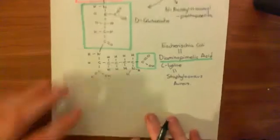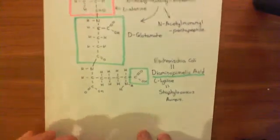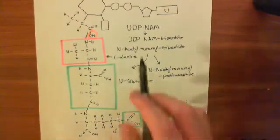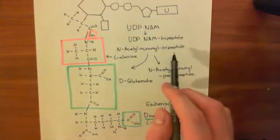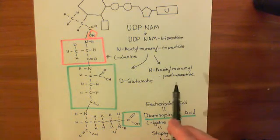Welcome back to this next video on antibiotics which affect cell wall biosynthesis in bacteria. In this video, what we're going to do is look at how it is that we convert N-acetyl muramyl tripeptide into N-acetyl muramyl pentapeptide.